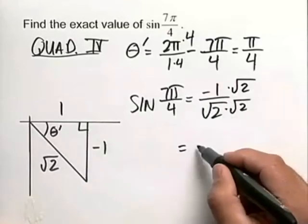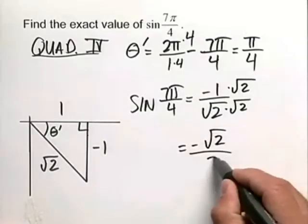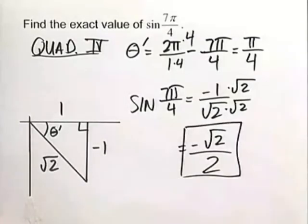Once we've rationalized this, we get negative √2 over 2. That is the exact sine value for 7π/4, and we've got it.